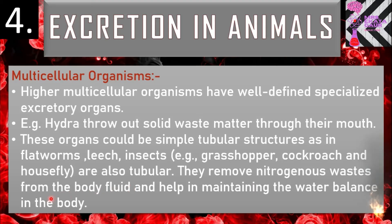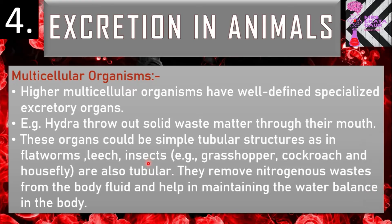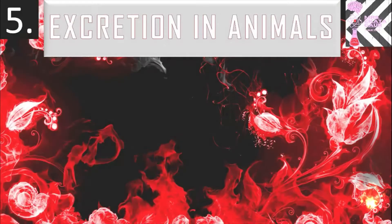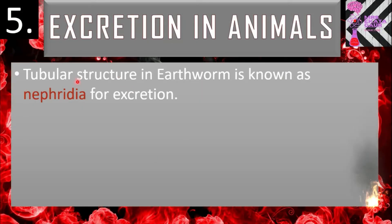These tubular structures remove nitrogenous waste from the body fluid and help in maintaining the water balance in the body. Flatworms and annelids like leech, and arthropods like insects, all have excretory organs called malpighian tubules. The tubular structure present in earthworm for excretion is called nephredia.